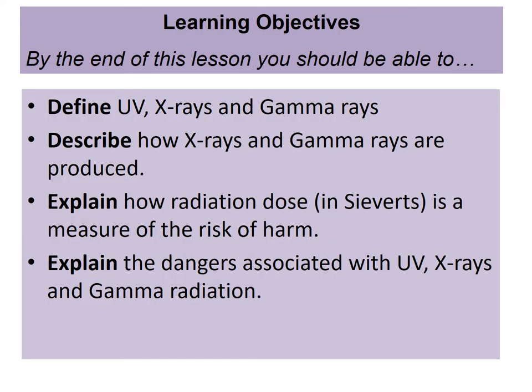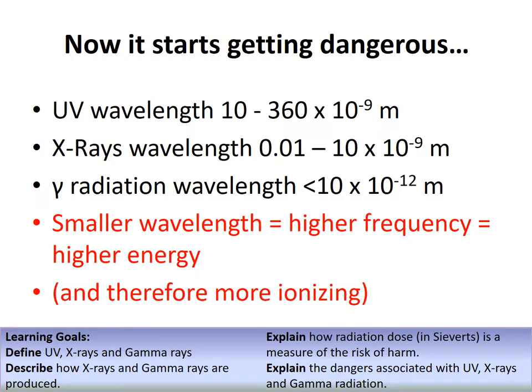Today's learning objectives: define UV, X-rays, and gamma rays as the final part of the electromagnetic spectrum; describe how X-rays and gamma rays are produced; understand how radiation dose in sieverts measures the risk of harm; and identify the dangers associated with all three types. We are getting into dangerous territory here.